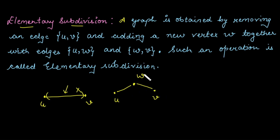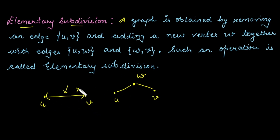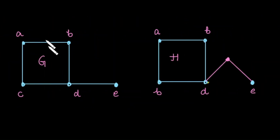In other words, a single edge is converted into two edges by adding a new vertex. Conversely, if you remove this new vertex, the two edges are converted back into a single edge between vertices U and V. Such an operation is called an elementary subdivision.